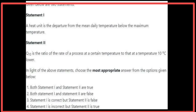Given below are two statements. Statement 1: A heat unit is a departure from the mean daily temperature below the maximum temperature — Statement 1 is false. Statement 2: Q10 is a ratio of the rate of a process at a certain temperature to that at a temperature 10°C lower — Statement 2 is true. The most appropriate answer is Statement 1 is false and Statement 2 is true.